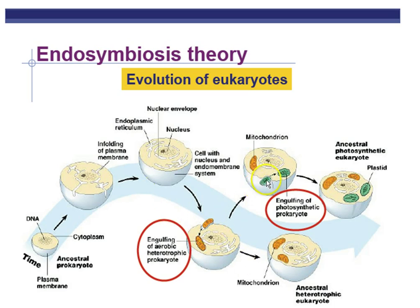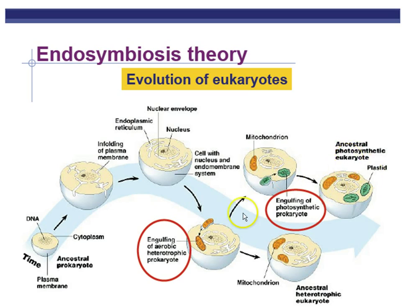Then later on in time, we think that a bacteria that acted like a chloroplast was engulfed by a cell, and this thing was not destroyed either. So now we have two living things inside of a cell — one able to capture light energy and make sugars, and the other able to use those sugars to make lots of ATP. This is the cell line that we think resulted in all the photosynthetic cells, including plants and many protists. We think the mitochondria was engulfed before the chloroplast. That is the endosymbiotic theory — the first division between plants and animals.